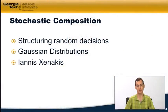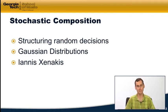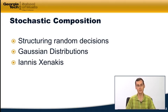In the last video, we looked at randomness and chance music, trying to make things sound as random as possible. In this video, we're going to keep working with random numbers, but step back to look at a technique called stochastic composition, which is about how to carefully structure our random decisions so that we have more control over the shape of the music.